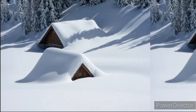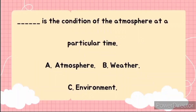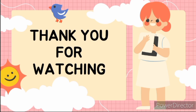So do you remember the four major seasons around the world? They are spring, summer, autumn, and winter. Quick question: which of the following is the condition of the atmosphere at a particular time? A) Atmosphere, B) Weather, or C) Environment? The correct answer is option B — weather is the condition of the atmosphere at a particular time. Thank you for watching till the end; don't forget to attempt your quiz. Bye bye!